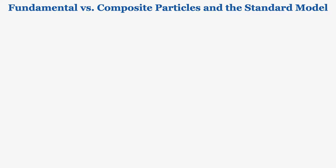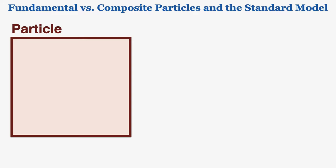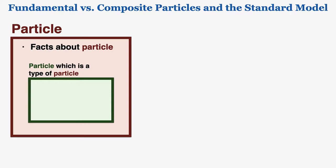I've decided on a system where I display information about a particle in a box, with the name of the particle written above it in the same color. I'll display facts about the particle, and if there are other particles that are types of that first particle, I'll display those in a smaller box within the larger box.